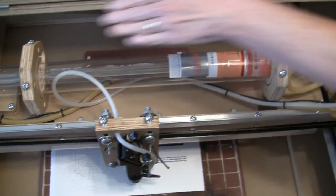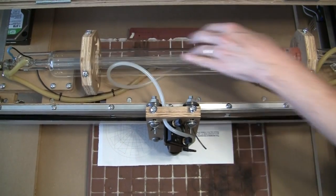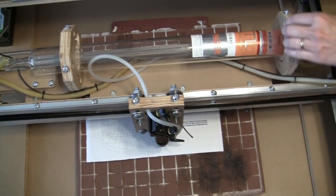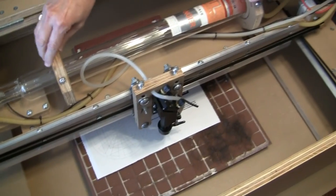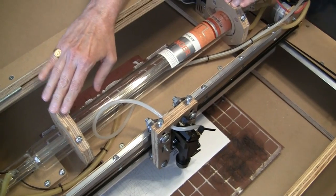I also want to show how the laser tube is mounted in the gantry. The laser tube is mounted with these two mounts, which is a very durable and sturdy mount. It's not going to change its position at all.